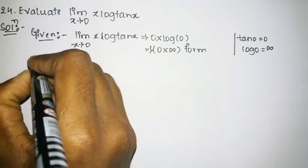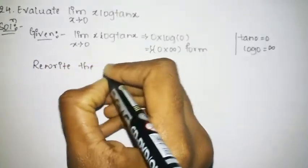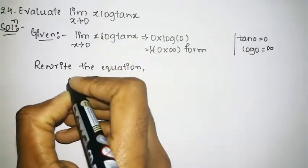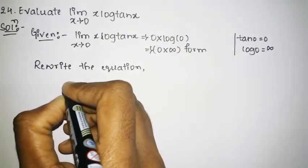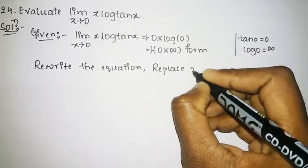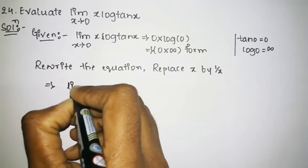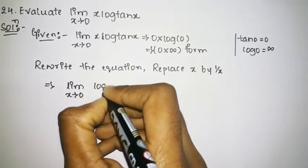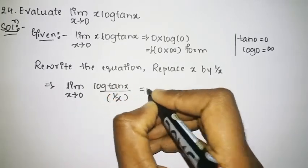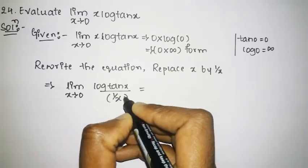We need to rewrite the equation to reduce it to either 0 by 0 form or infinity by infinity form. We do this by replacing x with 1 divided by x. Therefore we can write it as the limit as x tends to 0 of log of tan x, divided by 1 divided by x.